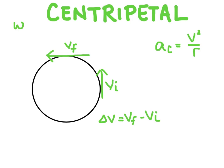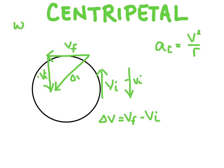To show why centripetal acceleration points into the center, consider two tangential velocity vectors on the circle. To find delta V, we flip the initial velocity to get its negative and add it to the final velocity using vector addition. When we draw in delta V, we can see that it points into the center of the circle — confirming that centripetal acceleration always points inward.